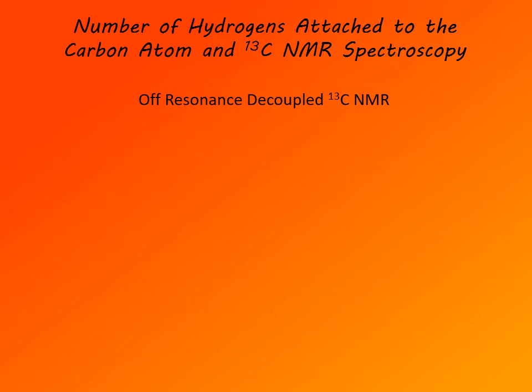Typically, carbon-13 NMR spectrum is recorded as a proton-decoupled spectrum, also called a broadband decoupled spectrum. During acquisition, protons are irradiated with a broad range of frequencies at which they absorb, so protons end up flipping between two spin states rapidly and only the average state is experienced by carbon — so there is no coupling. Each carbon signal therefore appears as a singlet. Here is an example of a broadband decoupled spectrum of a molecule that contains four different carbon atoms.